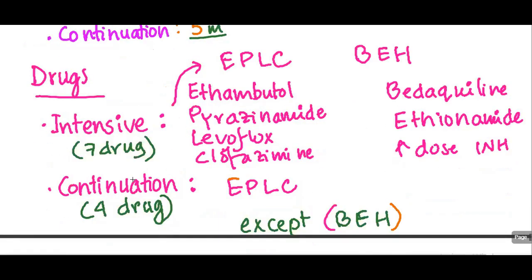So what are the drugs? In the intensive phase, we use seven drugs. And in the continuation phase, from the seven drugs we exclude three and continue the other four. So what are the seven drugs? For remembering those seven drugs, I have a mnemonic: EPLC.